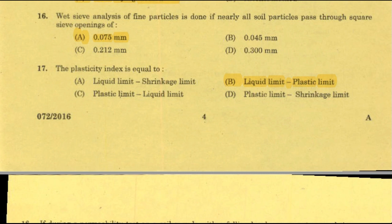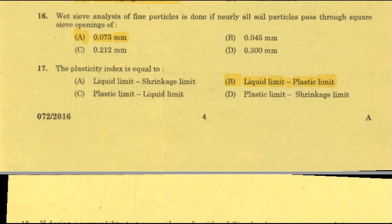Next question: The plasticity index is equal to liquid limit minus plastic limit — option B, right answer. Plasticity index IP equals liquid limit minus plastic limit. Classifications: IP equal to 0 means soil is non-plastic; IP less than 7 means low-plastic; IP of 7 to 17 means medium-plastic; IP greater than 17 means highly plastic.